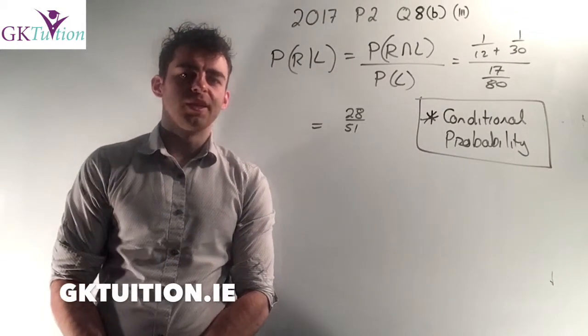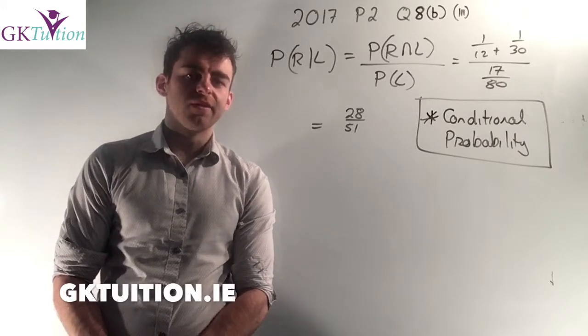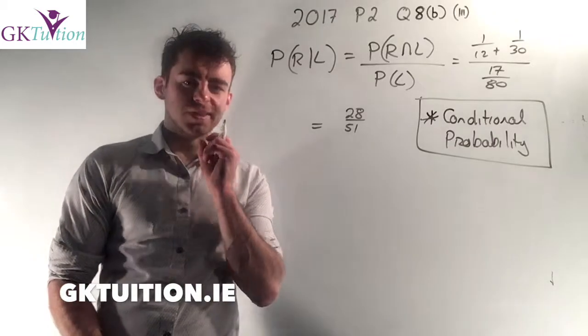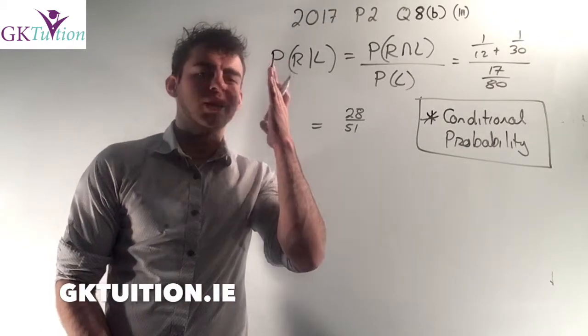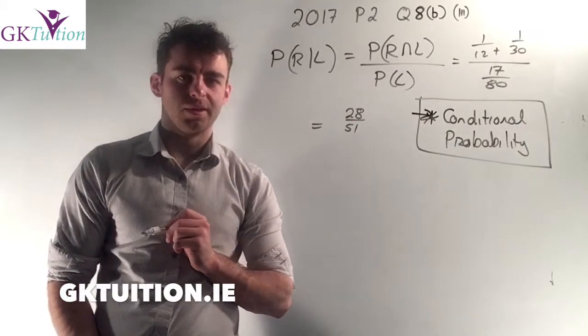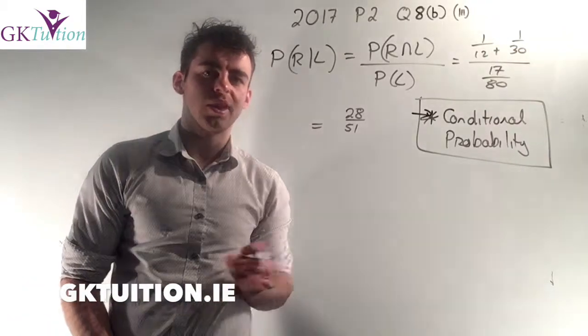Okay, the final part of this question asks me to work out the probability that it rained in the morning given that you were late. Now the word given is the giveaway here. If it says the word given, the probability it rained in the morning given you were late, you should recognize that as conditional probability. The condition being that you were late. What are the chances that it rained on the condition that you were late?